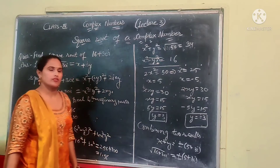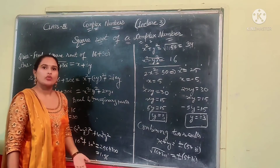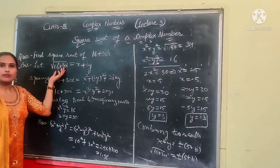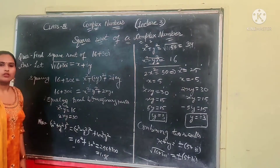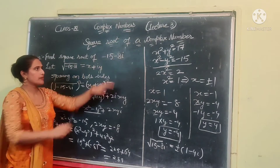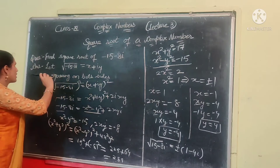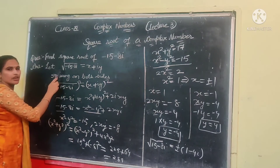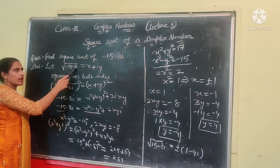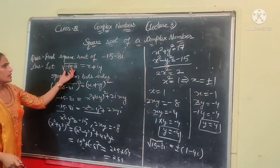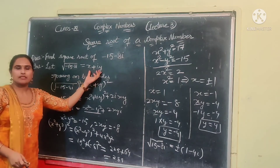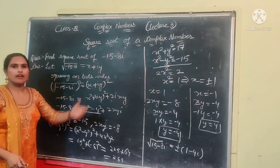This is the required answer. In this way, we find the square root of a complex number: the square root of 16 plus 30 iota equals plus or minus (5 plus 3 iota). Next question: find the square root of minus 15 minus 8 iota. We let the square root of minus 15 minus 8 iota equal x plus iota y.